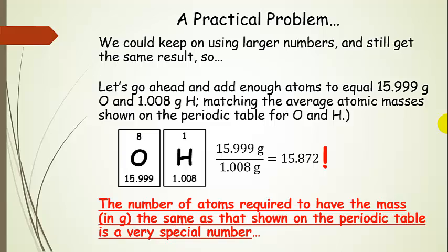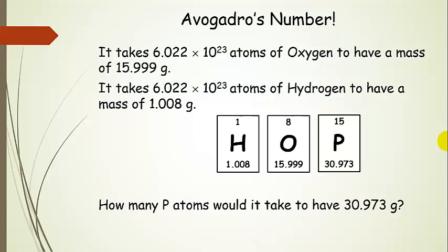If we keep using larger and larger numbers, we're still going to get the same result. So let's add enough atoms to get 15.999 grams of oxygen and 1.008 grams of hydrogen — matching the average atomic masses on the periodic table, except now in grams. The number of atoms it takes to have those masses is a very special number: Avogadro's number. It takes 6.022 times 10 to the 23 oxygen atoms to have a mass of 15.999 grams, and 6.022 times 10 to the 23 atoms of hydrogen to have a mass of 1.008 grams.